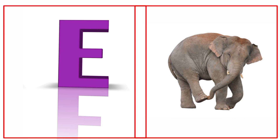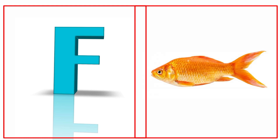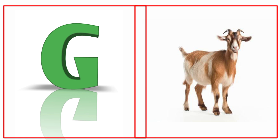E for elephant. Elephant means hathi. F for fish. Fish means machli. G for goat. Goat means buckari.